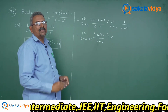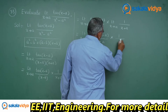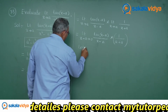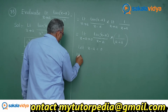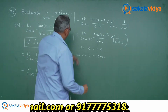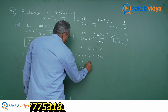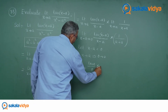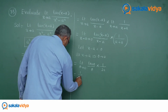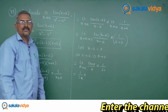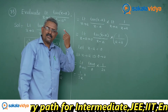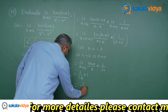Now we can directly substitute the limit for the second part, giving us 1/(a plus a). If we let x minus a equal θ, then as x approaches a, θ approaches 0. So this becomes: limit θ tends to 0, tan θ/θ, multiplied by 1/(2a). Since limit θ tends to 0, tan θ/θ equals 1 — this is one of the standard formulae in limits — this equals 1 × 1/(2a).